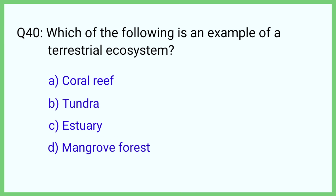Question number 40. Which of the following is an example of a terrestrial ecosystem? The correct answer is option B: Tundra.